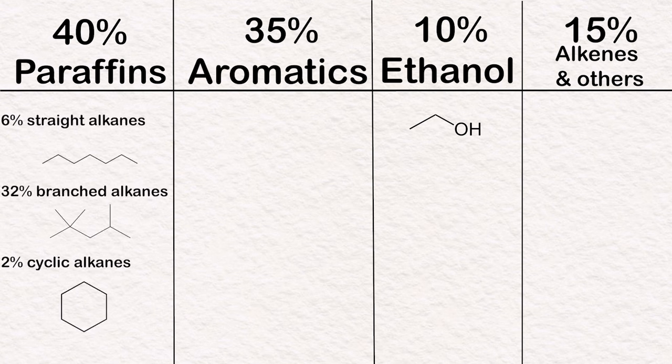Within the 40% of paraffins, 6% are straight alkanes, 32% are branched, and 2% are cyclic. Of the aromatics, about 15% is toluene, and 20% are other alkylbenzenes like xylene and ethylbenzene.